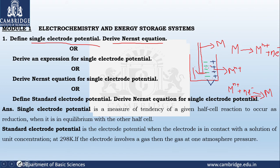Reading the definition once again: it is a measure of tendency of the half cell reaction to occur as a reduction when it is in equilibrium. That means the potential difference arises at the junction between the metal and the solution interface — that is called the single electrode potential. While writing the answer, only this one sentence is needed, and it will give you two marks.